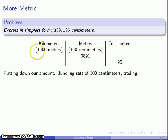Again, I can trade again. 1,000 meters make up 1 kilometer. So I'll split off a few thousand meters. So there's a 3,000 meter split, 891 left over. And I'll trade. 1,000 meters for 1 kilometer. This 3,000 meters becomes 3 kilometers.